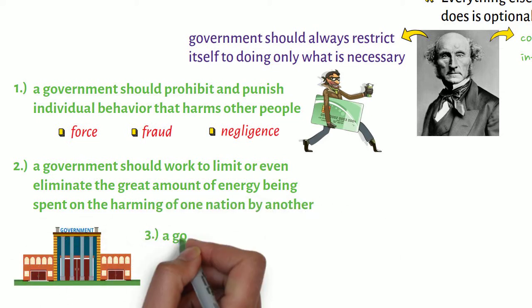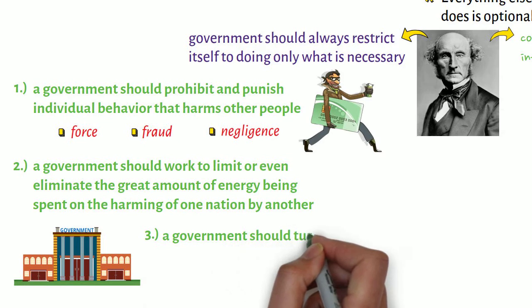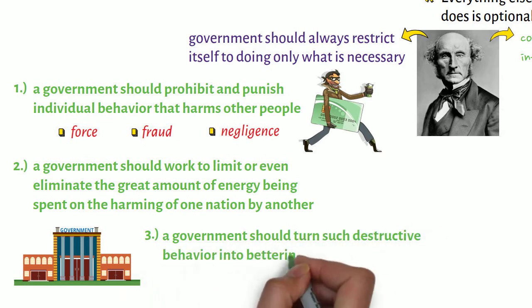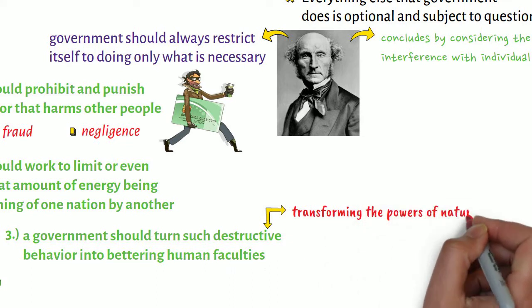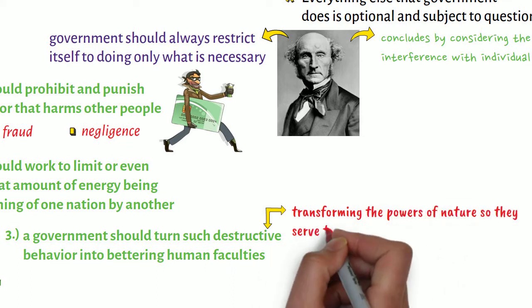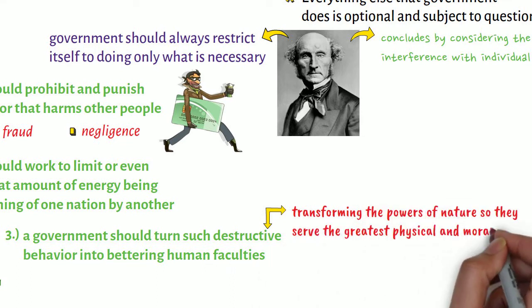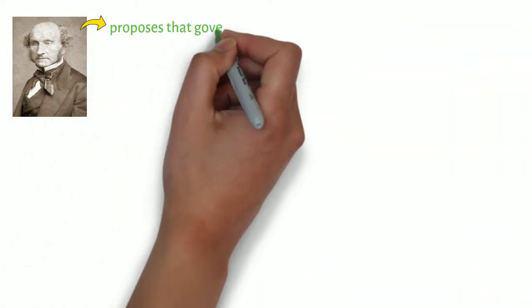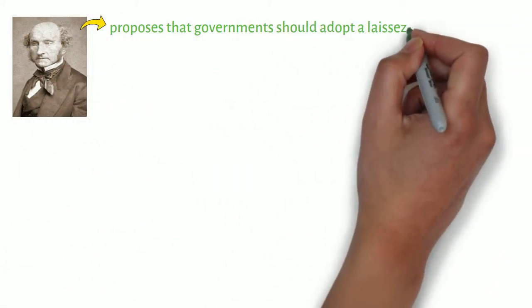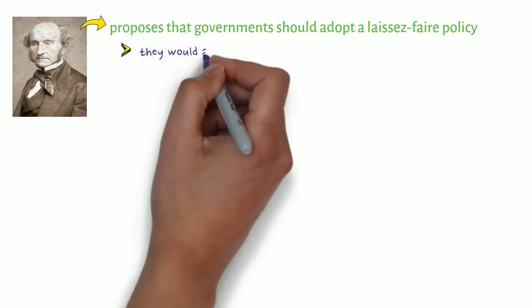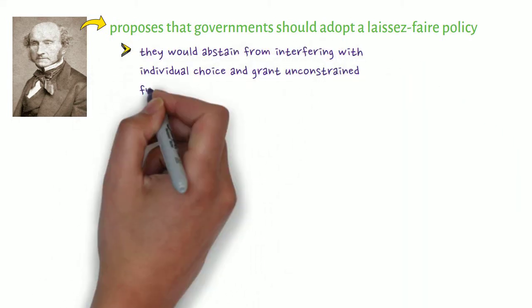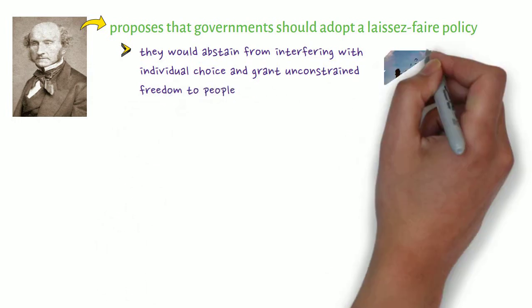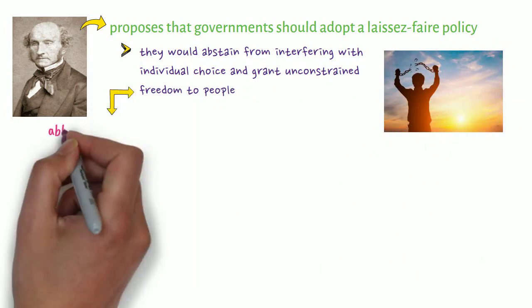Third, a government should turn such destructive behavior into bettering human faculties, namely, transforming the powers of nature so they serve the greatest physical and moral good. Finally, Mill proposes that governments should adopt a laissez-faire policy, in that they would abstain from interfering with individual choice and grant unconstrained freedom to people, who should be able to pursue their happiness without restrictions.